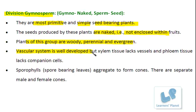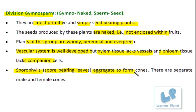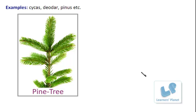The vascular system is well developed in Gymnosperms, but the xylem tissue lacks vessels and the phloem tissue lacks companion cells, meaning secondary growth is comparatively less. The sporophylls — defined as spore-bearing leaves — aggregate to form cones, and there are separate male and female cones in these plants. Examples of Gymnosperms include cycads, pine trees, and deodar plants.